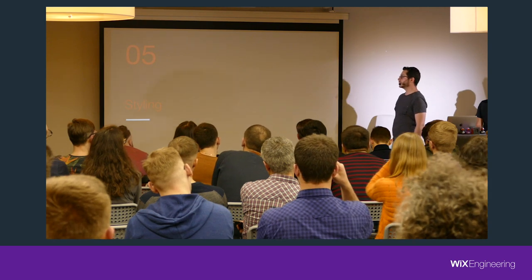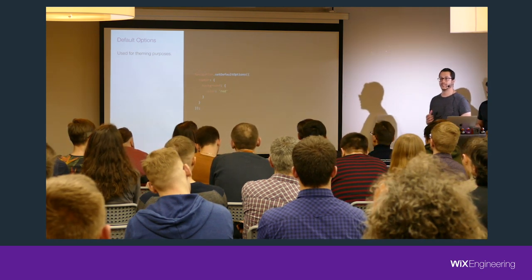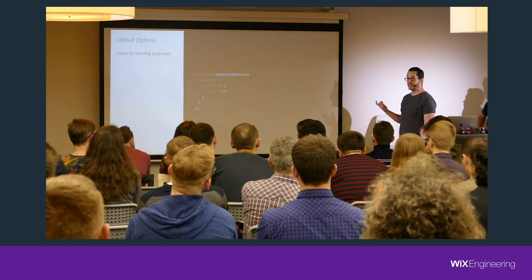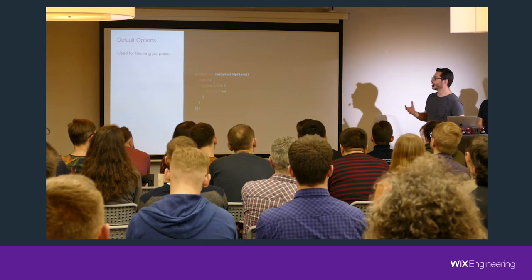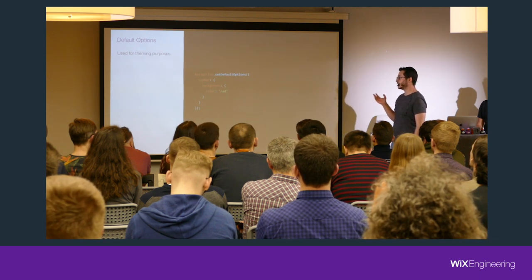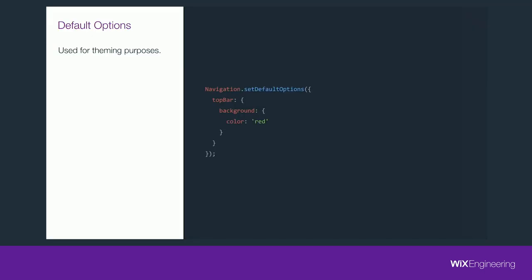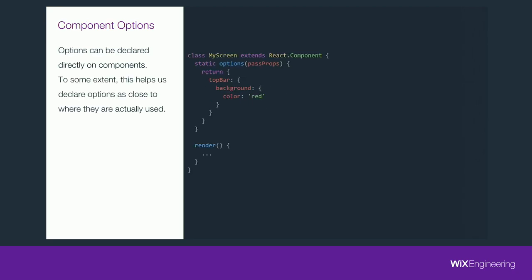Now, styling. Our apps today have distinct themes — product managers want to differentiate their app with colors, fonts, or whatever. To declare a theme, you set whatever options you want as the default options, which will be applied to any layout and component you declare. In this example we declare a red background color for any component. Another option, familiar from React Navigation, is to declare options statically on components — whenever this component is displayed, these options will be applied. This is very handy because you declare options as close as possible to where they'll actually be used.